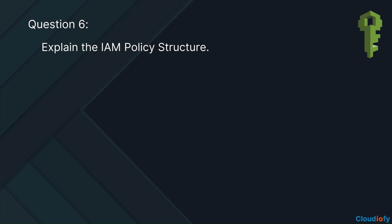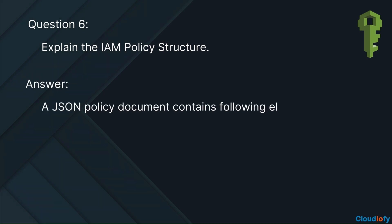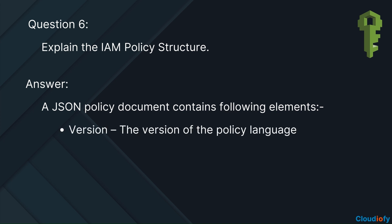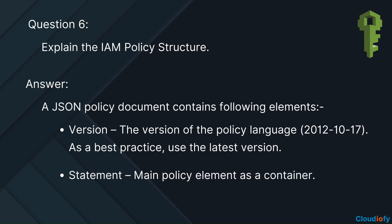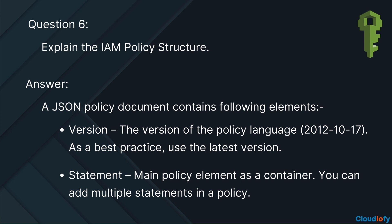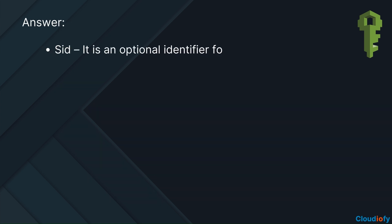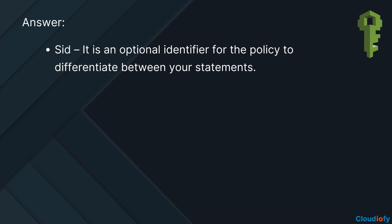Explain the IAM policy structure. A JSON policy document contains the following elements: the version of the policy language, 2012-10-17 — as a best practice, use the latest version. Statement — the main policy element as a container; you can add multiple statements in a policy. SID — an optional identifier for the policy to differentiate between your statements.